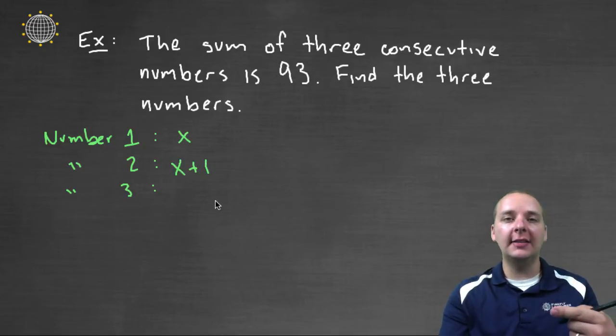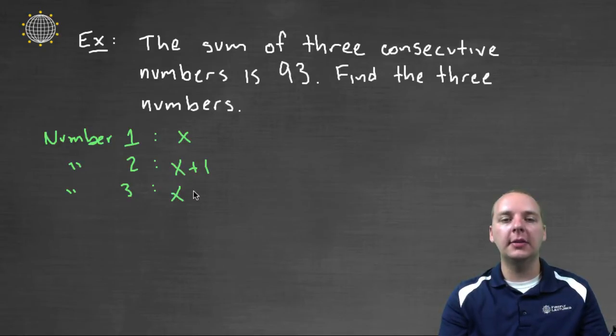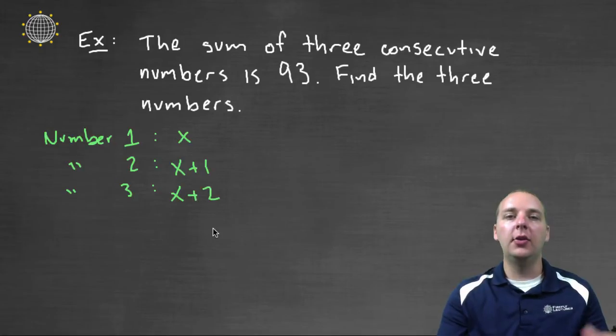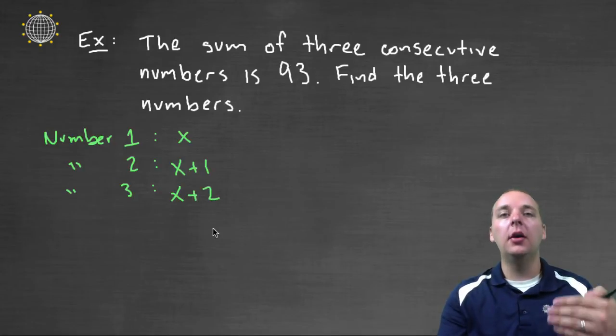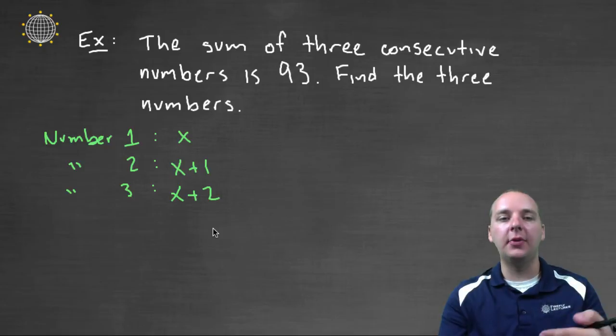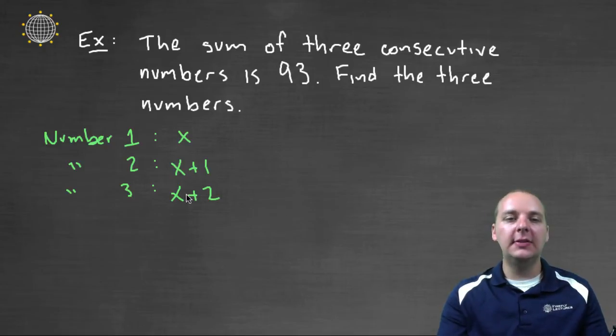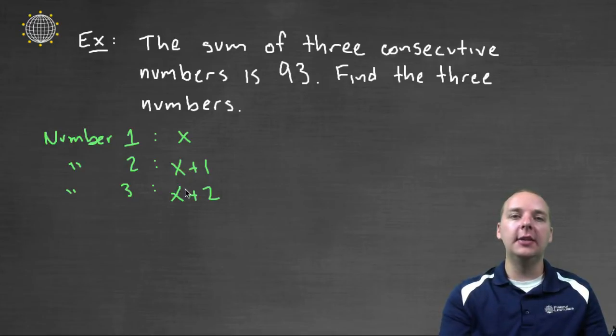Because it's the next guy. And then the next number following x plus one would be x plus two. In other words, it's x plus one plus one. It's the one after x plus one. So this is the preferable way to write these three consecutive numbers using variables because we always want to write it in the least number of variables possible and so I'd much rather just have x as opposed to x and y and z.